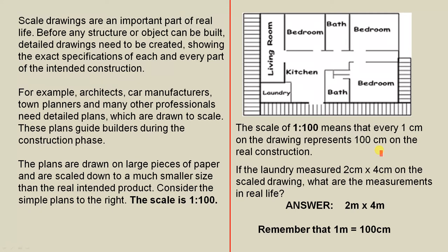If the laundry measured 2 cm by 4 cm on the scaled drawing, what are the measurements in real life? So the answer would be 2 m by 4 m. Remember that 1 m is 100 cm. So 2 m by 4 m would be the measurement in real life.